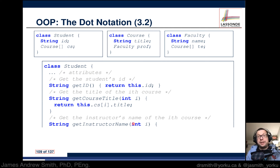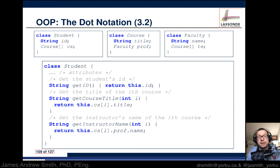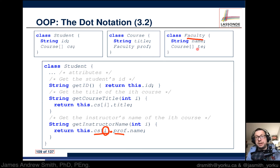We can also get the instructor's name for a particular course. We return a String and pass in the course number i. We return this student's course array cs[i], ask for the professor — which is of type Faculty — and then return that professor's name.